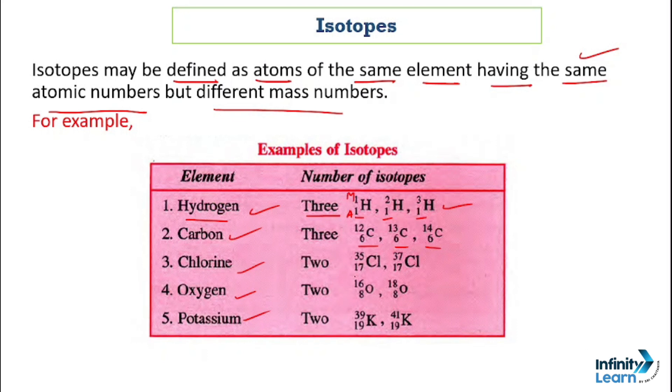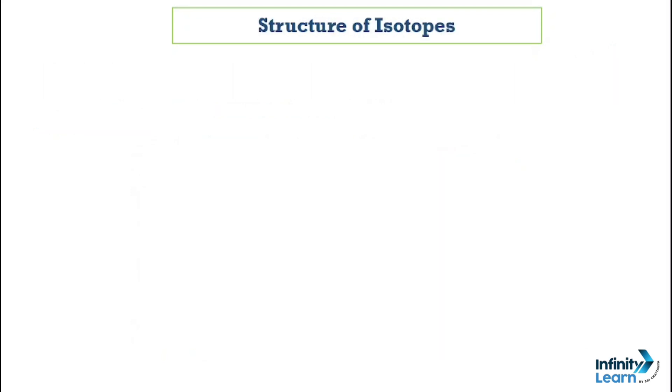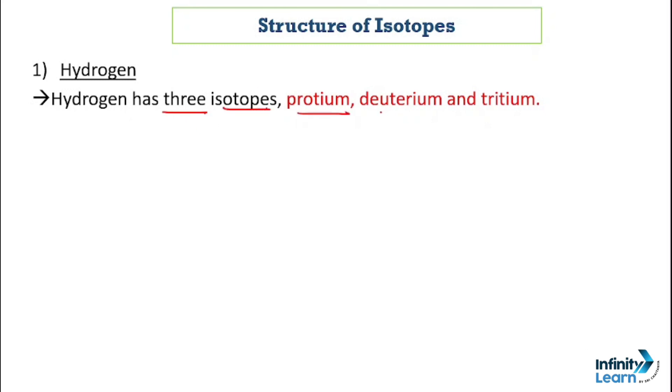Hydrogen has 3 isotopes: the first is protium, the second is deuterium, and the third is tritium. In all of these, the atomic numbers are the same, but the mass number is different.